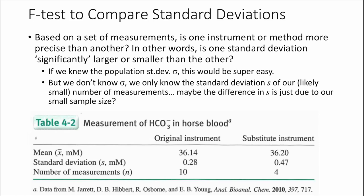So let's talk about the F-test. Oftentimes you do this test because you're going to do a T-test next, but there are also scenarios where you want to know: is one method more or less precise than another? Are the standard deviations of these two instruments or methods significantly larger or smaller? The scenario this textbook chapter gives: some horse trainers would inject bicarbonate into horses before a race because it neutralizes the lactic acid that builds up — this is banned. They test the horse's blood after the race. An instrument to measure this went off the market, so now there's a new instrument. Is it as precise? Here's the data: there's an average, a standard deviation, and a number of measurements.